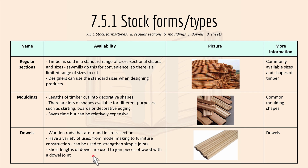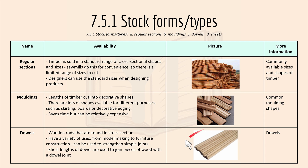Dowels are wooden rods that are round in cross section. They have a variety of uses from model making to furniture construction, and they can be used to strengthen simple joints called dowel joints. Basically, short lengths of dowel are used to join pieces of wood together with a dowel joint. Here's what a dowel looks like.